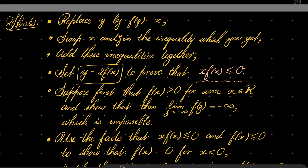Then suppose to the contrary — for example, that f of x is greater than zero for some real number x — so that the limit of our function as z goes to minus infinity actually exists and equals minus infinity, which is impossible given the previous constraint.